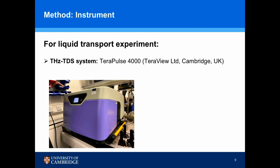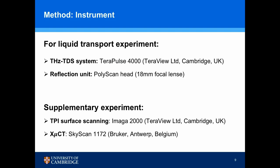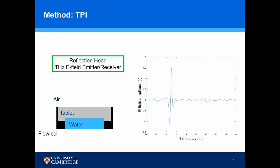For our liquid transport experiment, we use a Terahertz TDR system TeraPost 5000 coupled with a reflection unit Polyscan with 18mm focal length. We also use supplementary experiments including TPI scan and X-ray CT. Basically, we have our flow cell holding our tablets with water flowing beneath it. At the same time, we shine a Terahertz wave from above. Wherever it encounters an interface with a contrast of refractive index, it gives rise to a reflection peak on the waveform. The blue peak corresponds to the air-tablet interface and the red peak corresponds to the tablet-water interface.